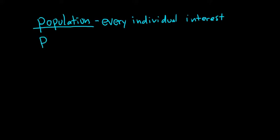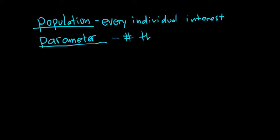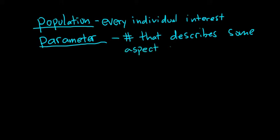There is a number associated with the population called a parameter. A parameter is a number that describes some aspect of the population. For example, if your population was all of the GPAs of all students at your school, then a parameter could be the average GPA of those students. Population, parameter — PP, pretty easy to memorize.